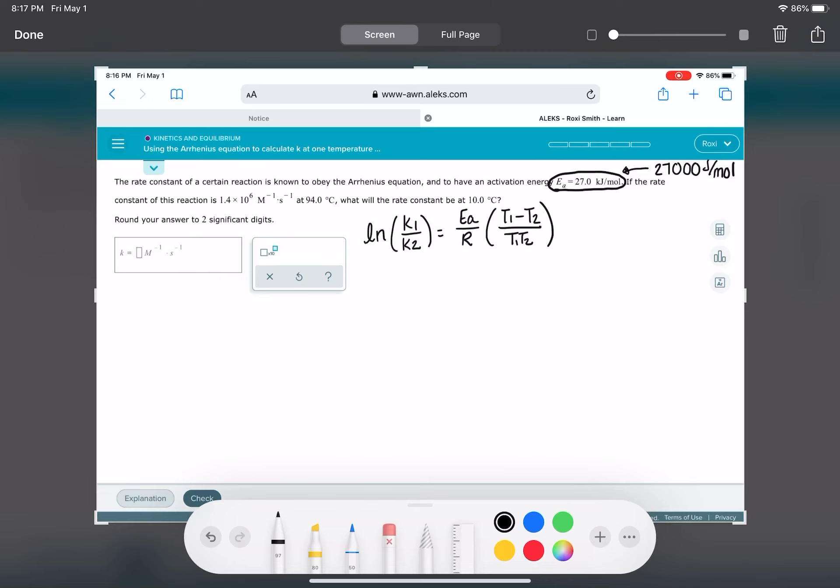And then it says, if the rate constant is this value, so let's call this K1 at this temperature, so let's call that T1, what will the rate constant be at this temperature? So we'll call this one T2. And that means that we are solving for K2.